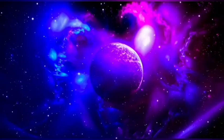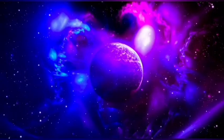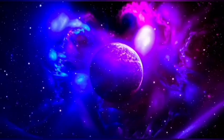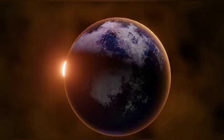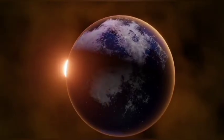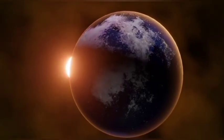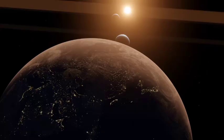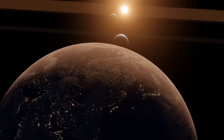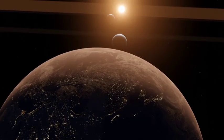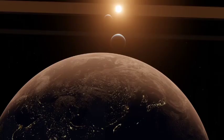Our solar system is just a tiny part of the Milky Way galaxy, which contains around 300 billion stars, many of which probably have their own planets. The closest star system, Alpha Centauri, is 4.3 light-years away, meaning light takes 4.3 years to get to us from there.